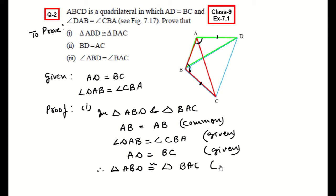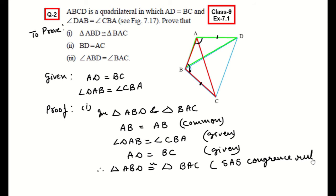Which property was applied here? Side, Angle, Side — the SAS congruency rule. This completes our first part.